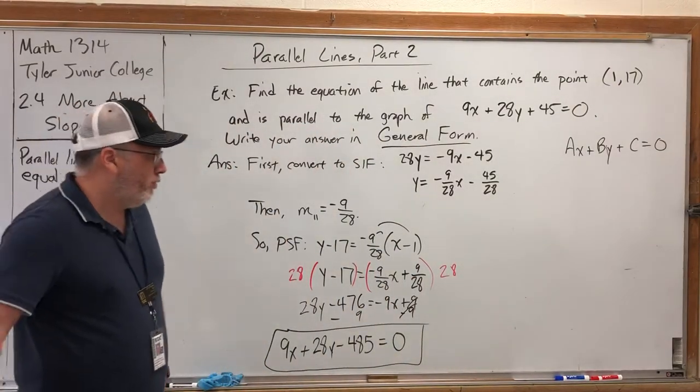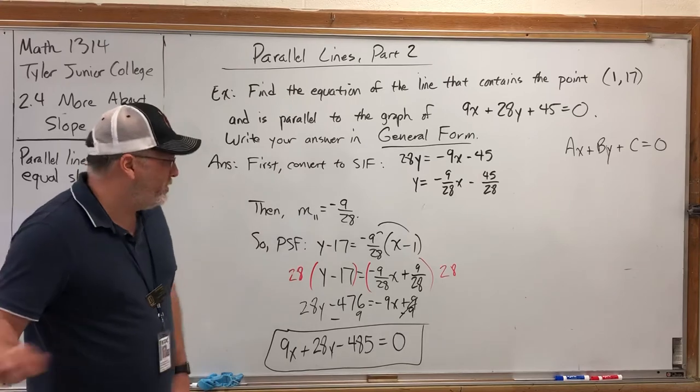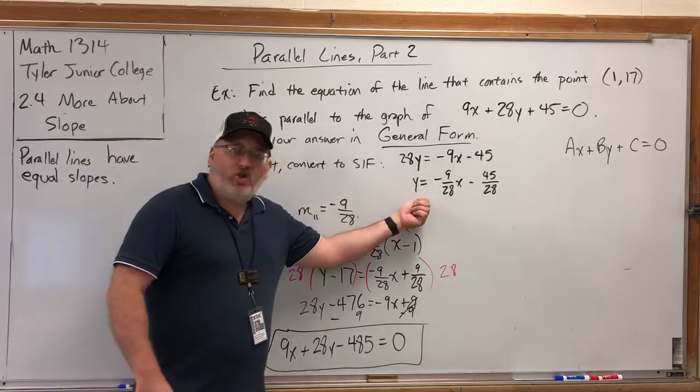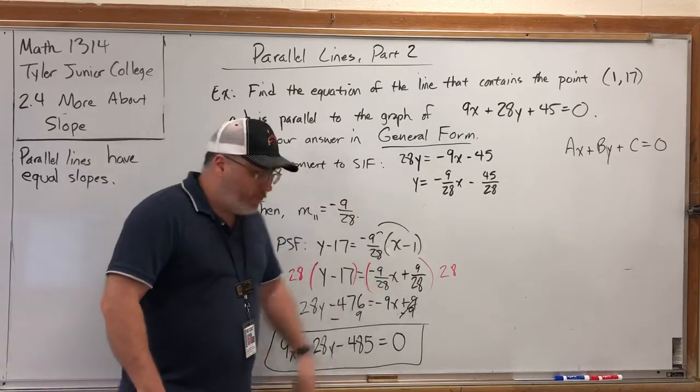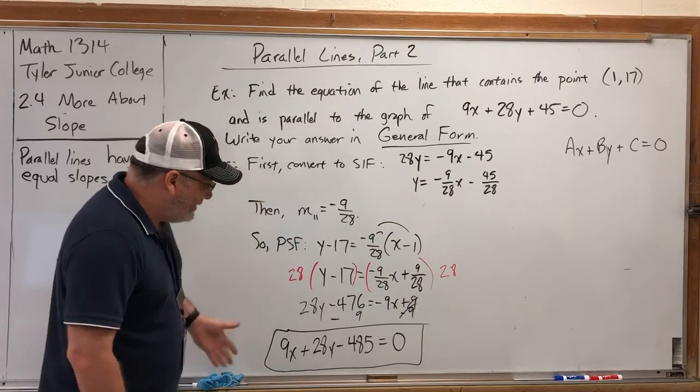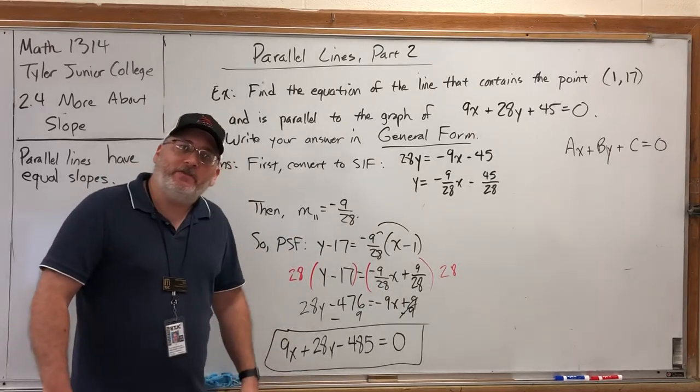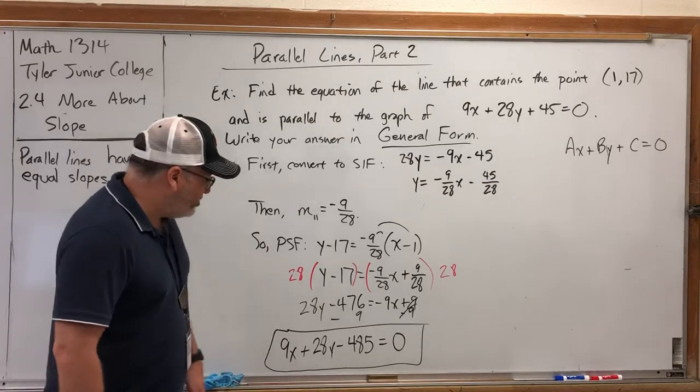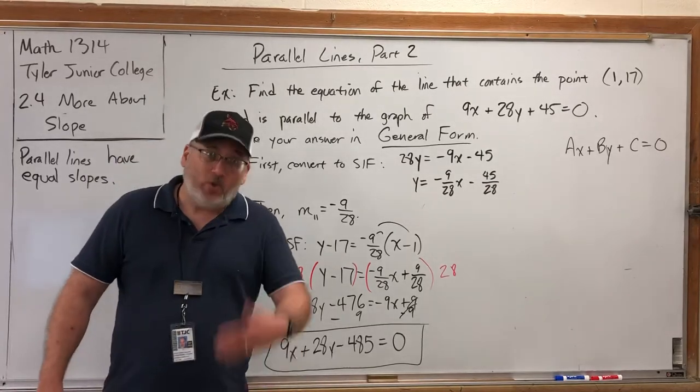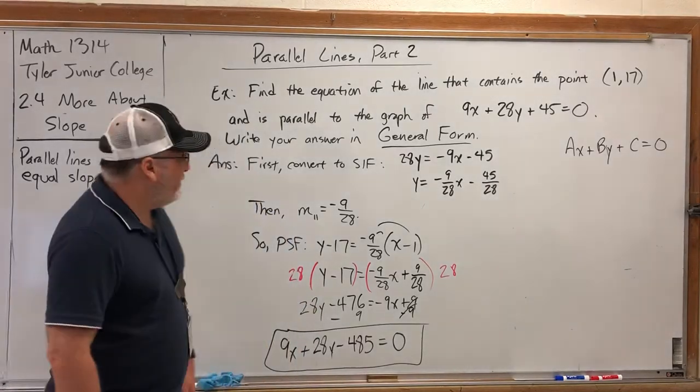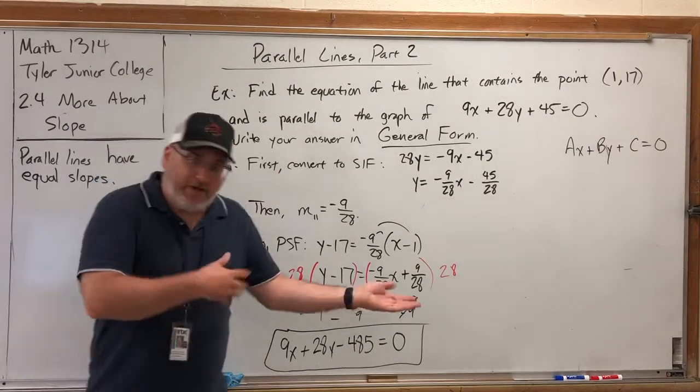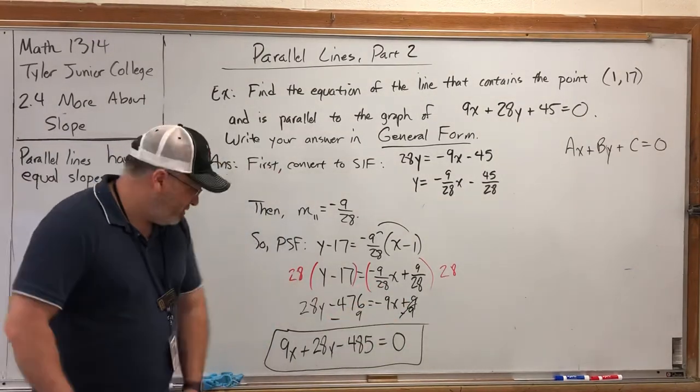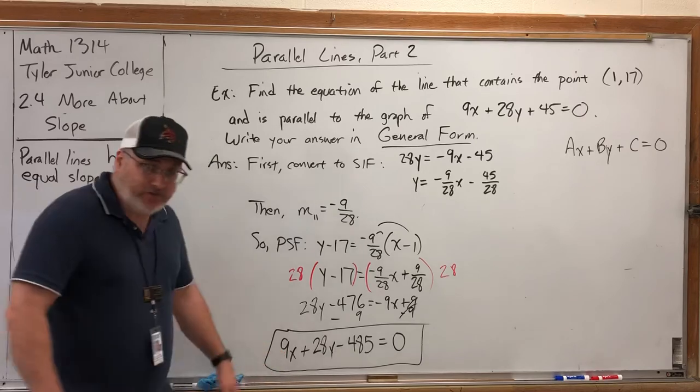So it's the same game as before, except when things are in general form, there are two additional moves. Number one: extracting the slope after converting to slope-intercept form. And number two: at the end, the cleanup is a little bit different because the objective is different. If the objective is slope-intercept form, then you want to get Y by itself. But if the objective is general form, you want everything on one side, no fractions, and the leading coefficient positive.